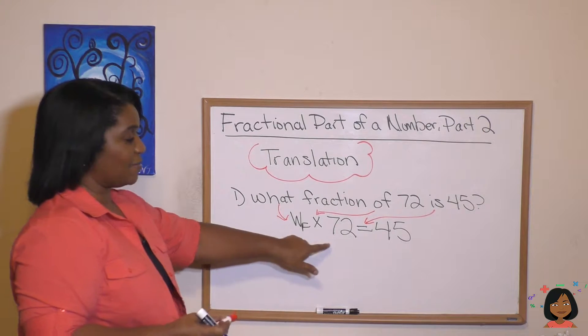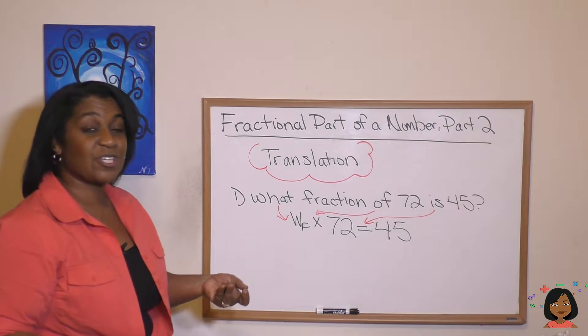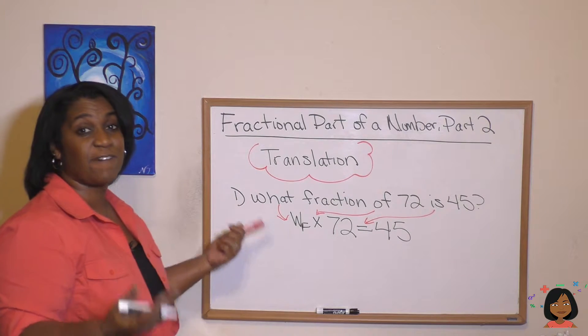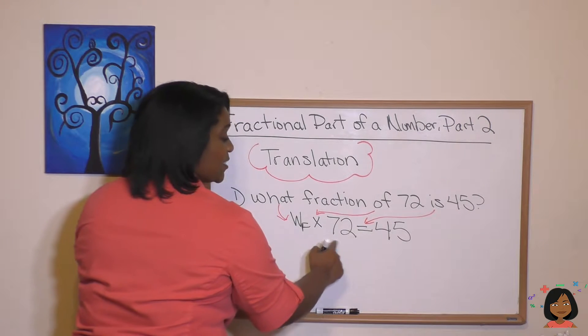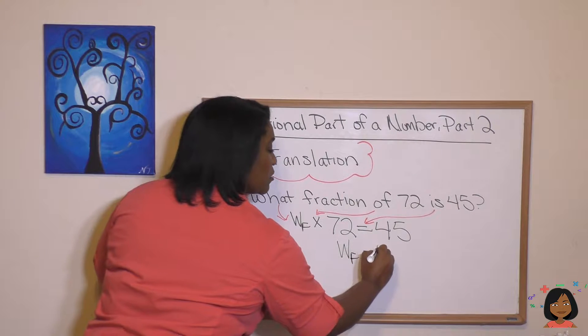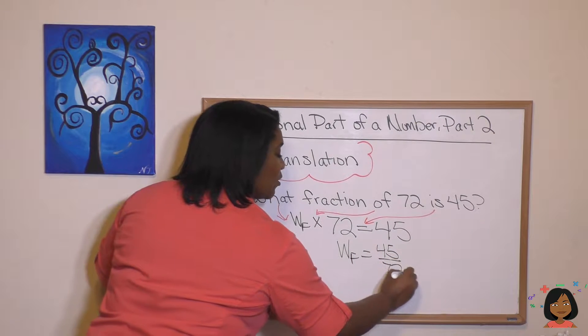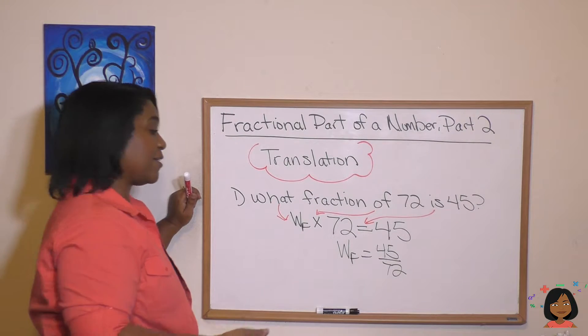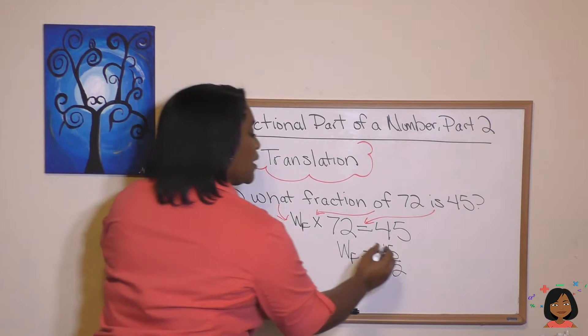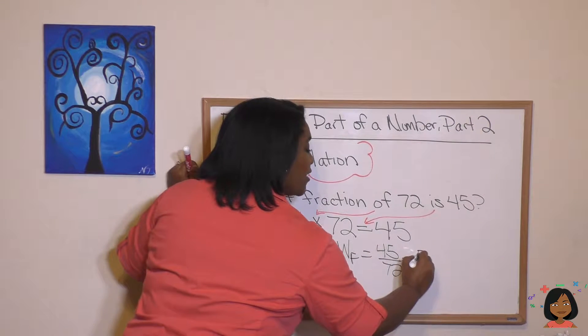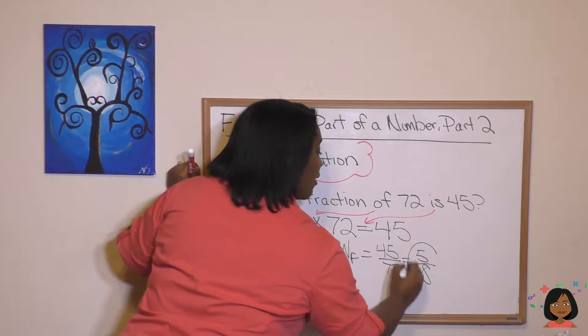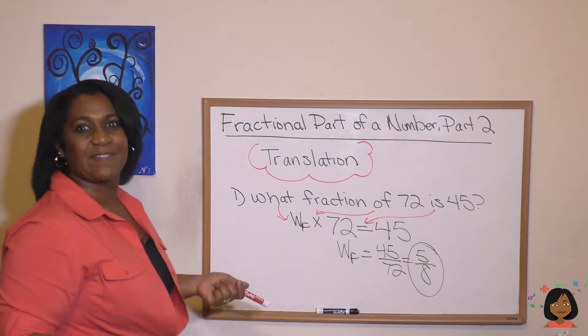So what fraction times 72 equals 45. And now it's just a missing number statement. We know a missing number statement, we need to divide to get that number. So we're going to divide 72 from both sides. We are left with what fraction equals 45 over 72. And all we have to do now is simplify this. So what number goes into 45 and 72? That's the number nine. Nine goes into 45 five times, and nine goes into 72 eight times. So our answer for what fraction is 5 eighths.